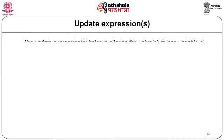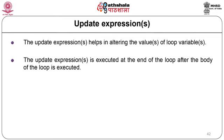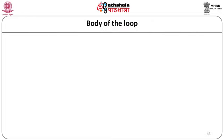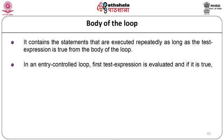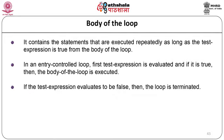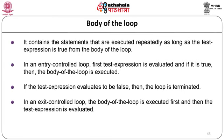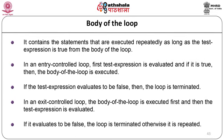The update expression alters the value of the loop variable and executes after the body of the loop. The body of the loop contains statements executed repeatedly while the test expression is true. In an entry control loop, the test expression is evaluated first; if true the body executes, if false the loop terminates. In an exit control loop, the body executes first, then the test expression is evaluated.